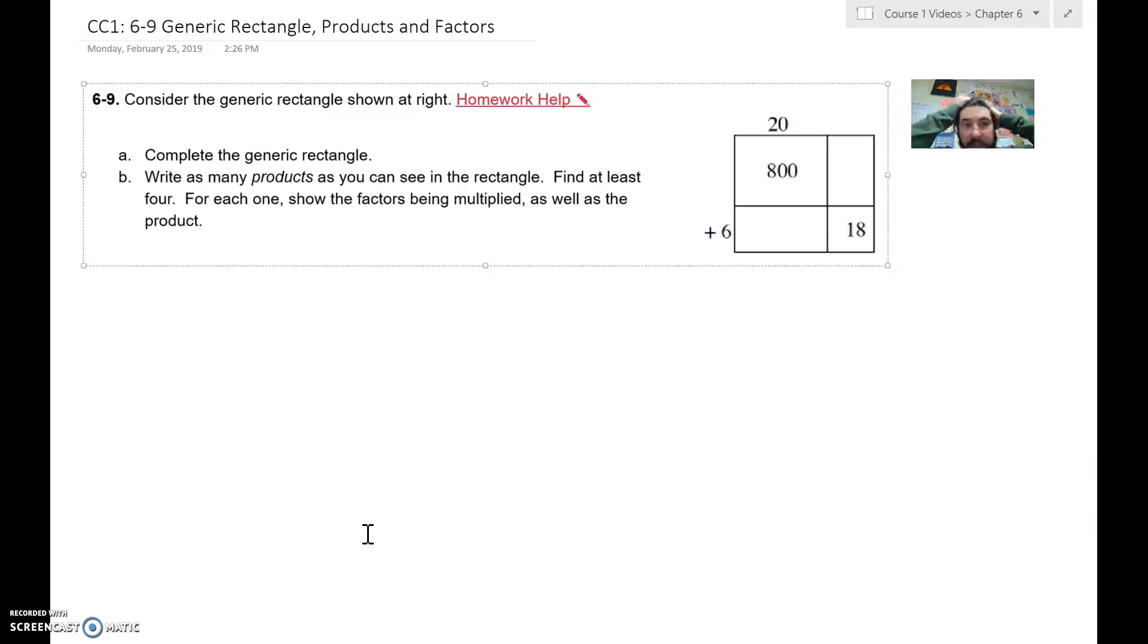So it says consider the generic rectangle at the right, and it's got some factors missing. So factors are the numbers that appear on the outside of the rectangle, and some products missing, and that's what's on the inside there where the area would be. So factors on the outside, and the products are on the inside.